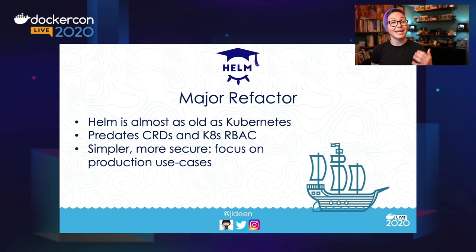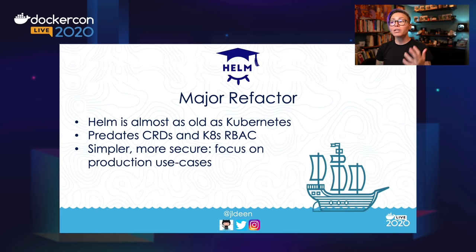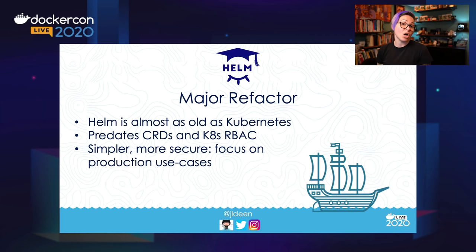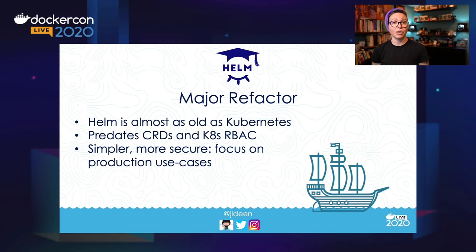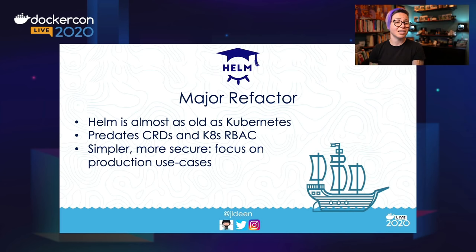Now that we've seen that Helm 3 still works pretty much the same way we would expect, even though Tiller is now removed, let's talk about what was required to make that a reality. Some people don't know that Helm is almost as old as Kubernetes. Kubernetes came out in May of 2014, and Helm was the child of a hackathon project at a company called Deis. Microsoft acquired Deis a few years ago, but the hackathon took place around October of 2015. So note that Helm is only a year and a half younger than Kubernetes.